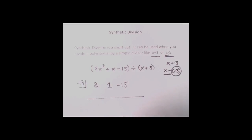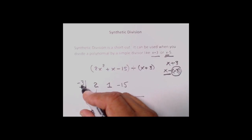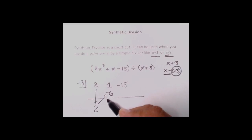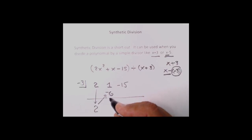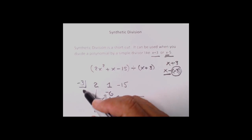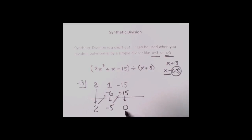I've got a line here where I can start putting my answer below it. The first number always comes straight down, so it's a 2. Now we zigzag: going up diagonally, I take 2 times negative 3 to give me negative 6. Then we combine: 1 minus 6 is negative 5. Go on the diagonal again, multiplying by the guy in front: negative 5 times negative 3 is positive 15. Combining coming down, we get 0.